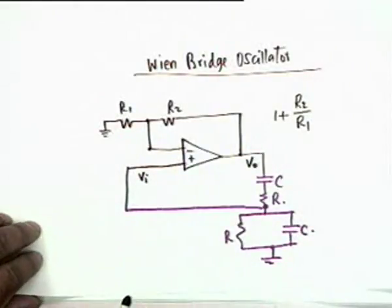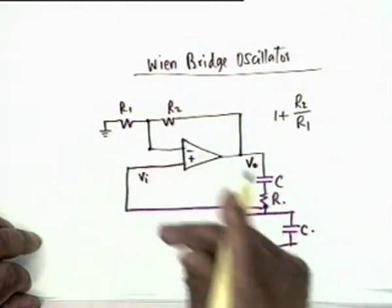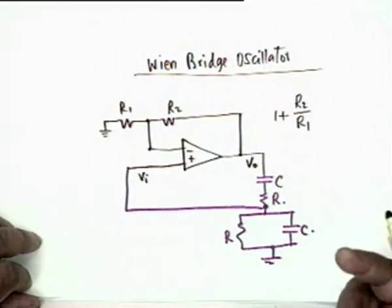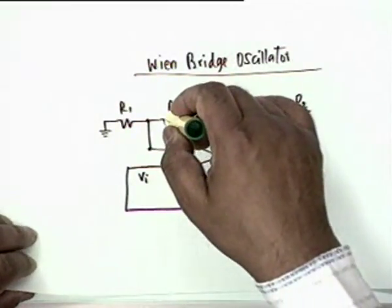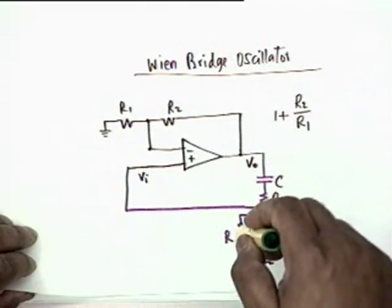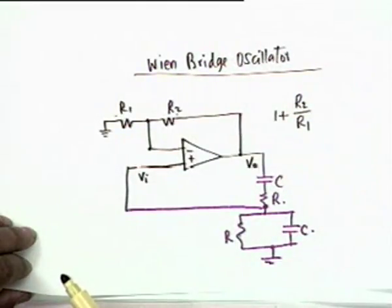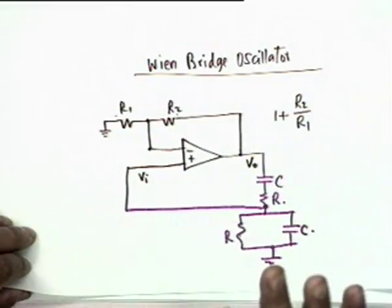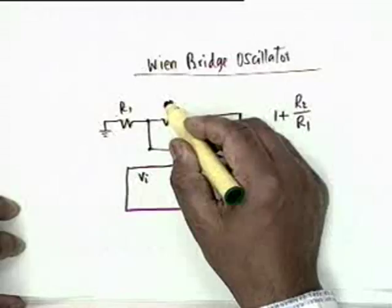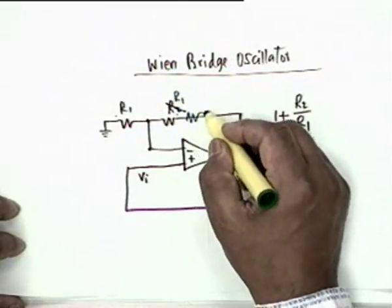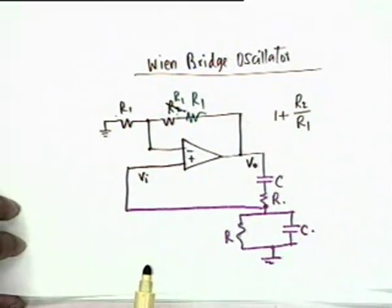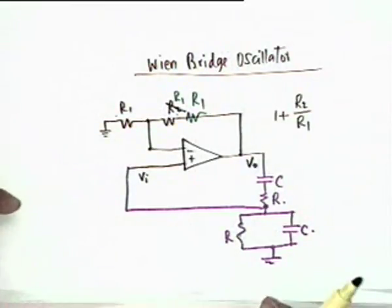The advantage of the Wien bridge oscillator is that the gain required is only 3 instead of 29. So R₂/R₁ = 2 (since gain = 1 + R₂/R₁ = 3). Better still, since R₂ = 2·R₁, you can make R₂ as two identical R₁ resistors in series — so the resistor spread is only 1, using identical resistors everywhere.